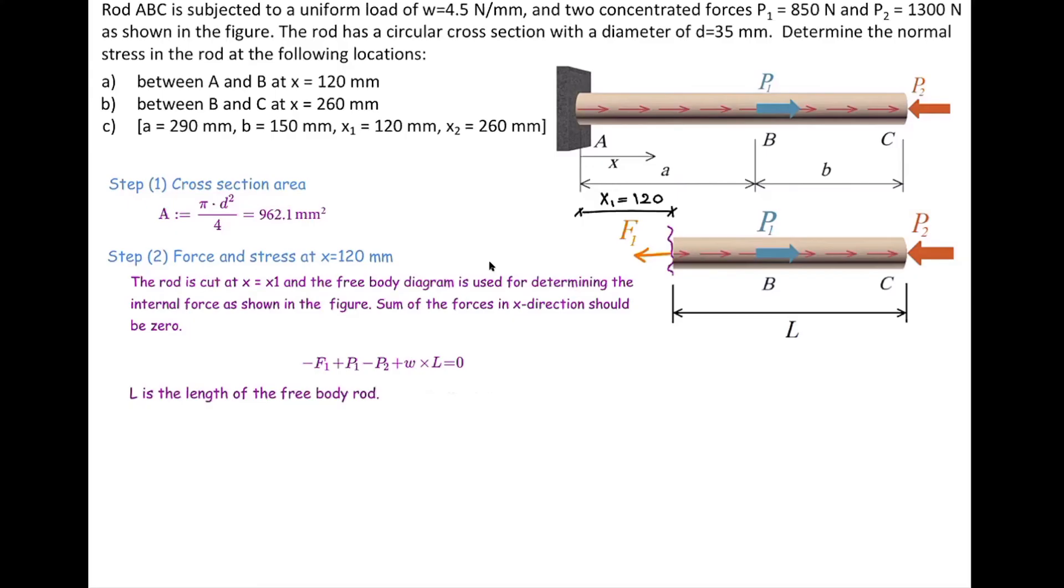The total length of the beam is A plus B, and the cut section is located 120 millimeters to the right. So the length of the free part is going to be A plus B minus X1. Plug in the values that we have for this problem, and that would give us the internal force at that cut section.